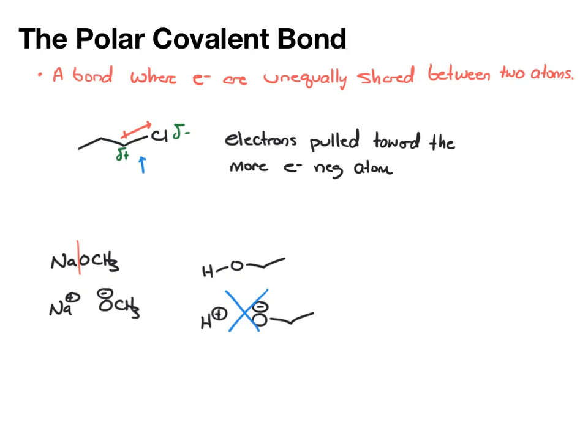Likewise, when it comes to carbon, let's say you have this organolithium compound. Because lithium's a metal and carbon's a non-metal, you can break that and write this as lithium plus, CH2CH3 minus, knowing that that carbon does have a lone pair.